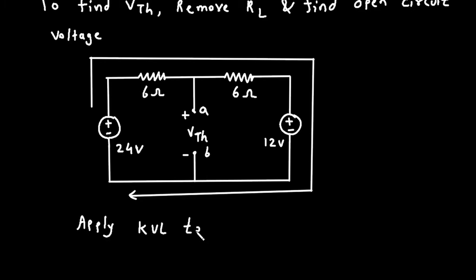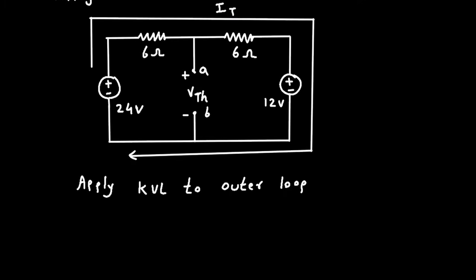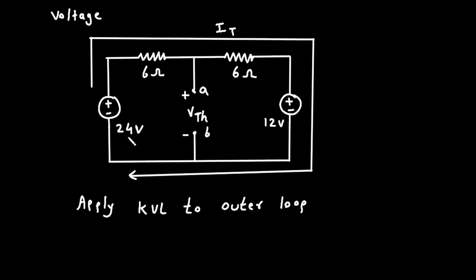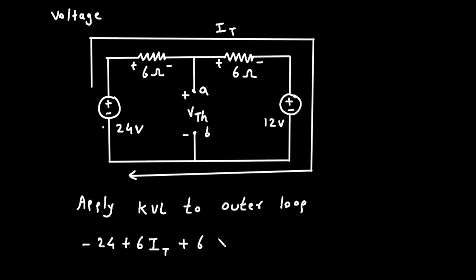Apply KVL to the outer loop. Let's say this current is IT. Starting from this point: minus 24, then plus 6·IT, plus 6·IT, plus 6·IT, then plus 12, equals 0.